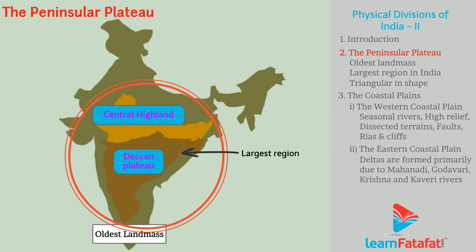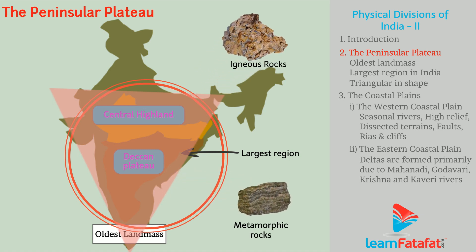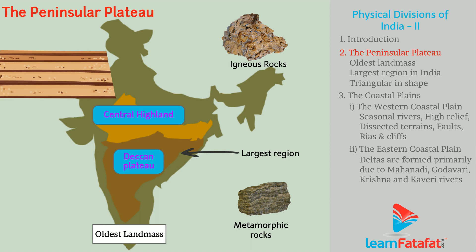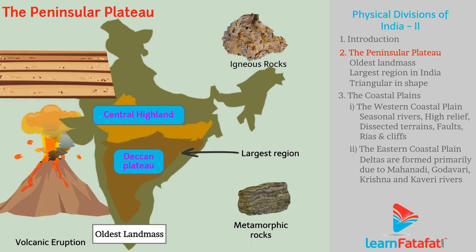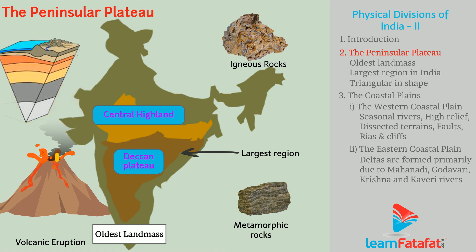This region has a triangular shape. It is made up of very old igneous and metamorphic rocks. The landmass features are due to faults and volcanic eruptions. In the cross section of this plateau we can observe horizontal layered lava.